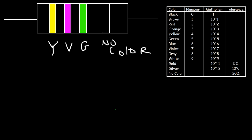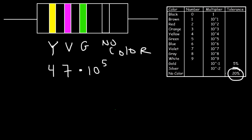So the first color is associated with the first digit — yellow corresponds to four. The second color is for the second digit — violet corresponds to seven. The third color is for the multiplier; green has a multiplier of ten to the fifth. And the last one is for the tolerance level. For no color, the tolerance is very high — it's twenty percent, that is plus or minus twenty percent.